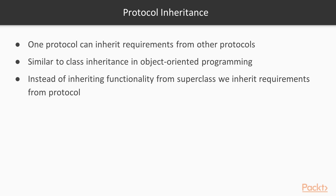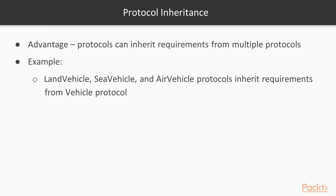Protocol Inheritance is where one protocol can inherit the requirements from other protocols. This is similar to class inheritance in object-oriented programming. However, instead of inheriting functionality from a superclass, we are inheriting requirements from the protocol. One advantage Protocol Inheritance has over class inheritance in Swift is that protocols can inherit from multiple protocols. In our example, the land vehicle, sea vehicle, and air vehicle protocols inherit the requirements from the vehicle protocol.